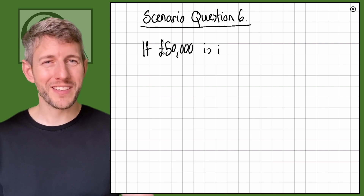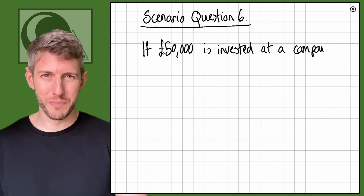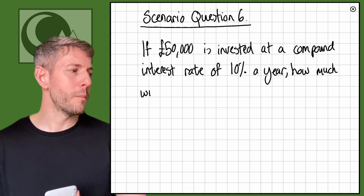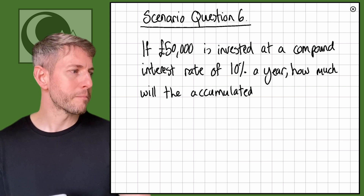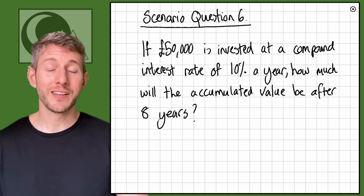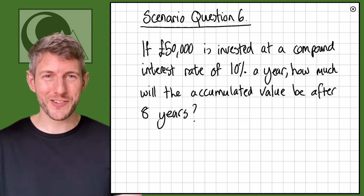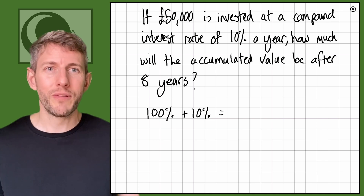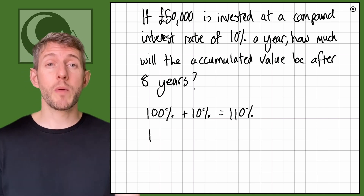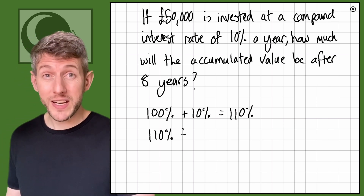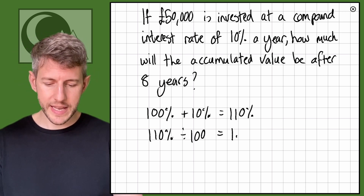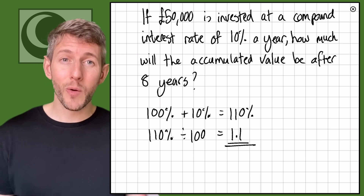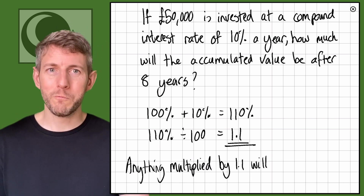Now here are the scenario questions. Let's do question six: if £50,000 is invested at a compound interest rate of 10% a year, what will be the accumulated value after eight years? We're looking at a 10% interest rate, so at the end of each year you'll have 110%. The decimal equivalent multiplier is 110 divided by 100, which equals 1.1. Anything multiplied by 1.1 will be increased by 10%.